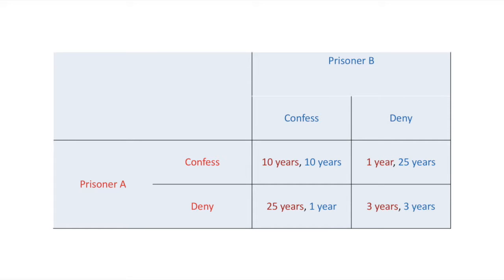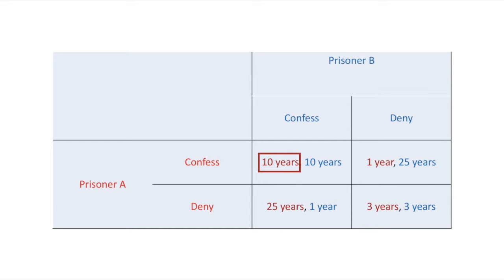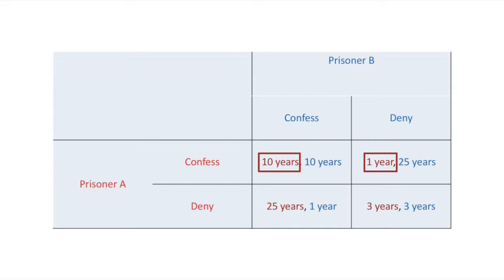Neither prisoner can communicate with the other, so they don't know what the other would do. We evaluate this through best response analysis. If Prisoner A assumes that Prisoner B will confess, he can either confess and get 10 years or deny and get 25 years — so his best response is to confess. If A assumes B will deny, he can confess and get one year or deny and get three years — so his best response is still to confess. Therefore, no matter what Prisoner B does, Prisoner A's best response is to confess. This is called a dominant strategy.